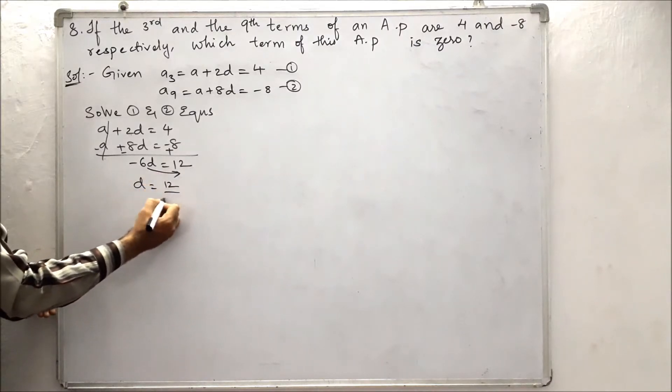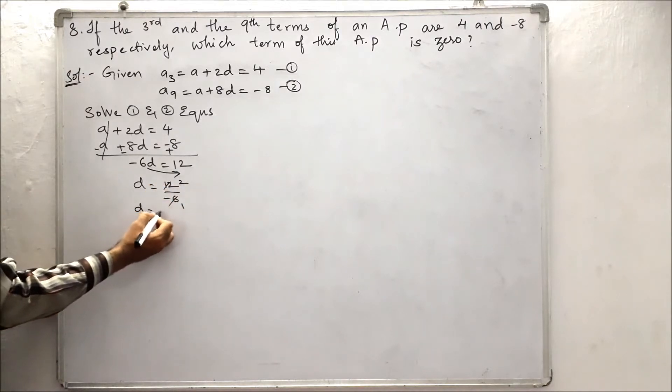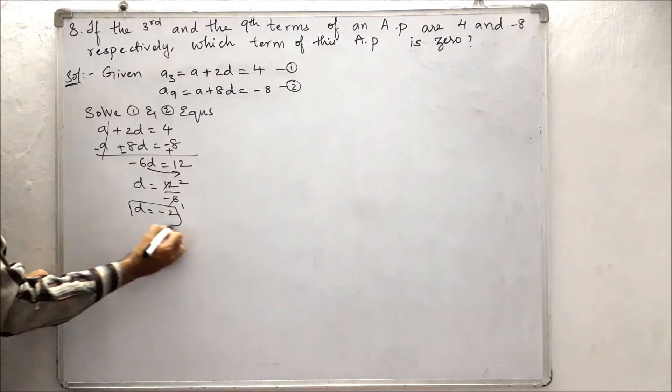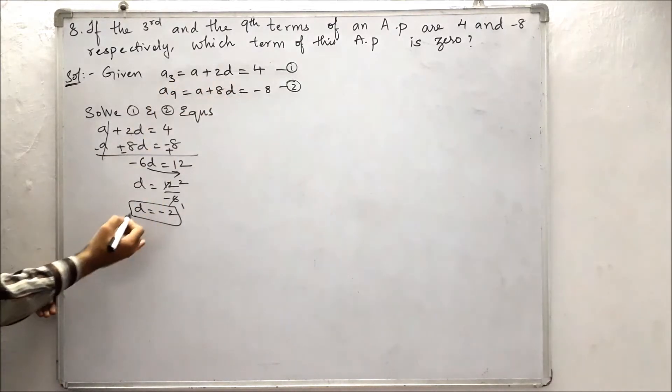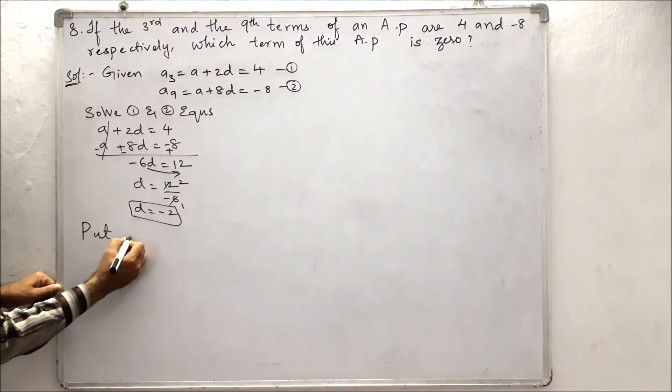6 goes into 12 twice, so d is equals to minus 2. Now for the value of a, we have to substitute this d value in the first or second equation.